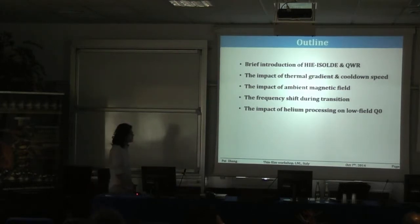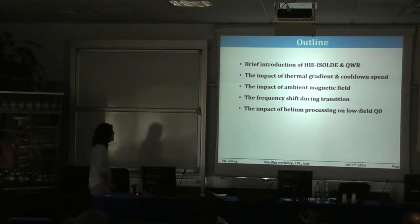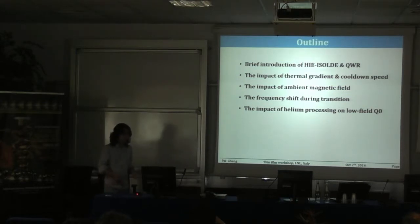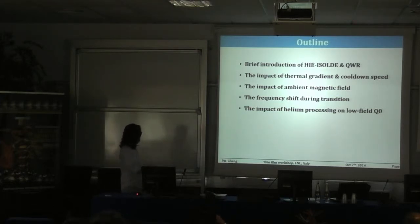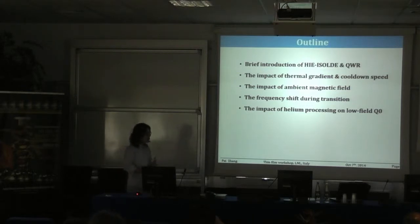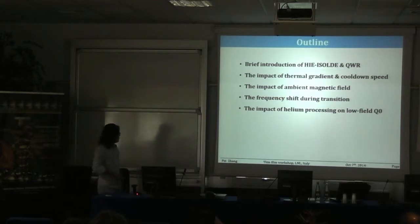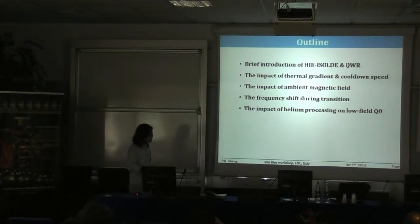After a brief introduction of the HiSol and the Q, I will talk about the impact of the thermal gradient in the cool-down sleeve — basically the two factors when you cool down the cavity. Then there's the impact of the ambient magnetic field. For bulk niobium, you shield your cavity; for coated cavities, especially our quarter-wave resonator, we don't do shielding. I'll show how sensitive this can be to ambient magnetic field. I'll also briefly mention the frequency shift during the transition, and finally show some of the latest results from last month on helium processing and its impact on low-field Q0.